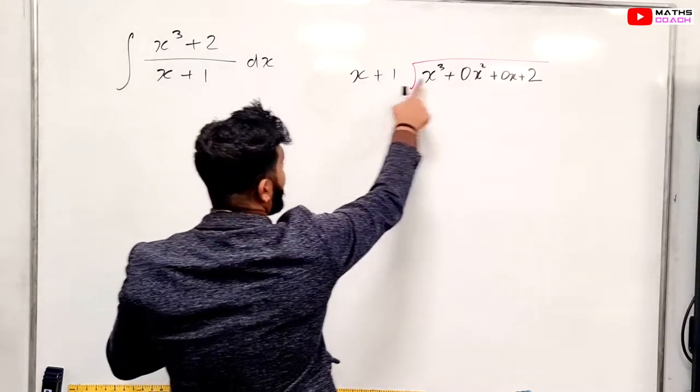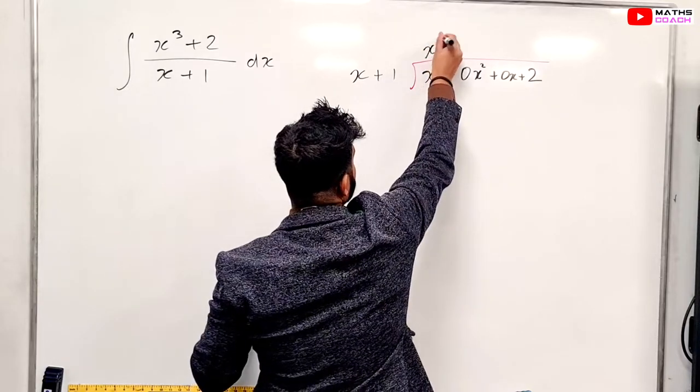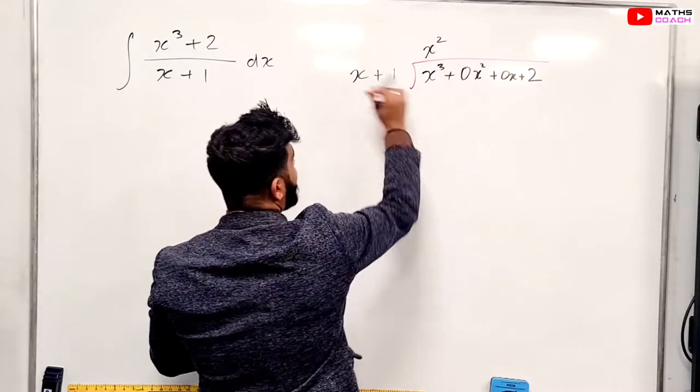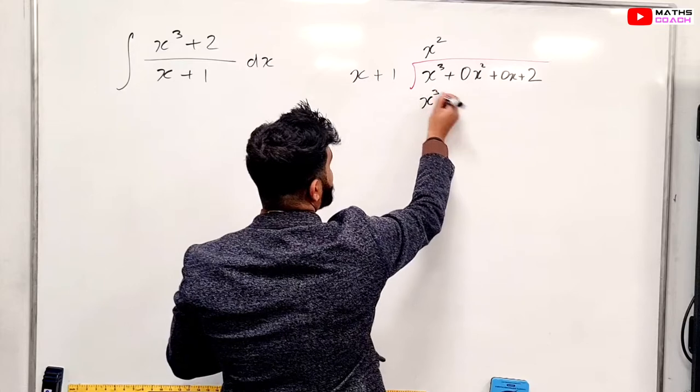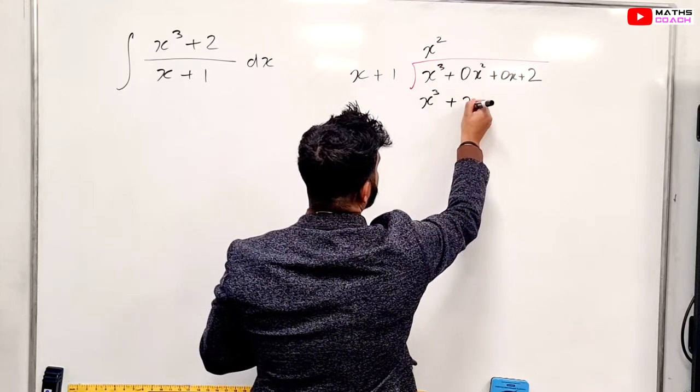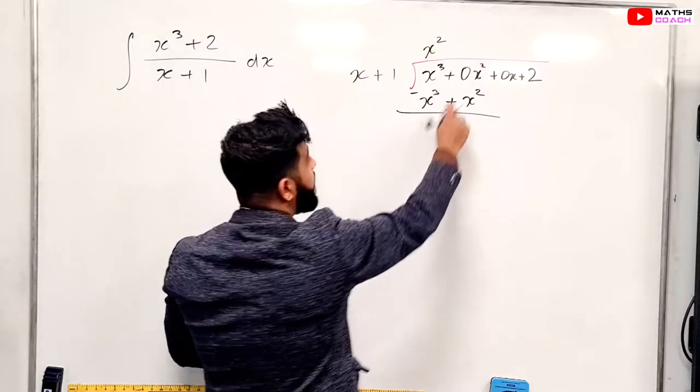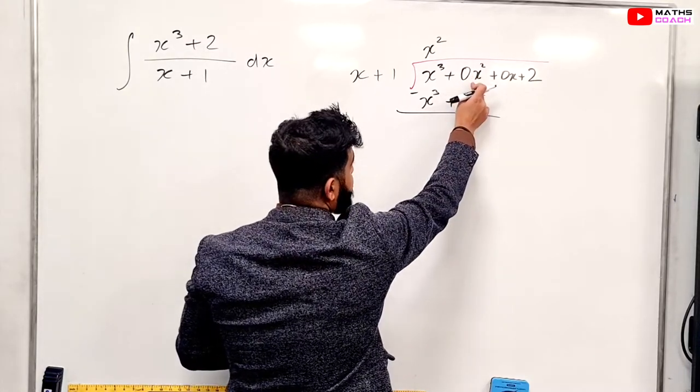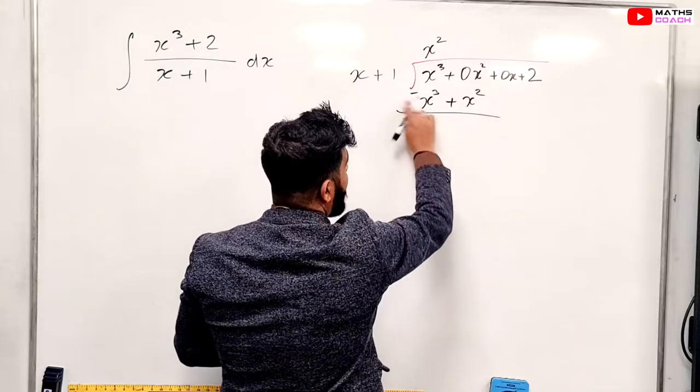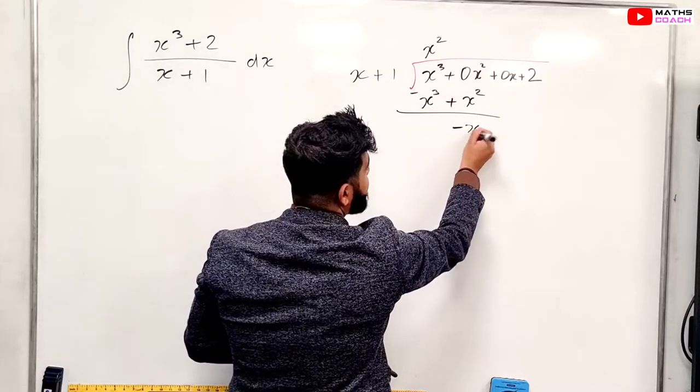So how many times does that go into here? We have x squared. So when we multiply out, we have x cubed here and then we have plus x squared. Take them away, we get 0. And here we have x squared, 0x squared minus that, so it's just minus x squared.